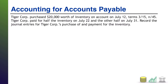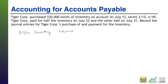All right, welcome back. Starting at the beginning, July 12th is our first journal entry. On this day, we purchased $20,000 worth of inventory, so debit inventory going up $20,000. We are purchasing on account with some payment terms, so we are going to establish an accounts payable of $20,000. That is a liability going up, so that is a credit.